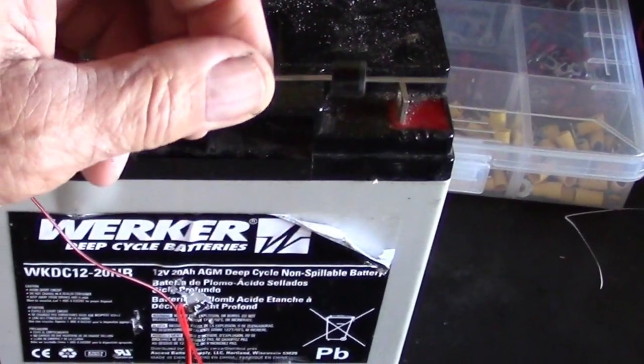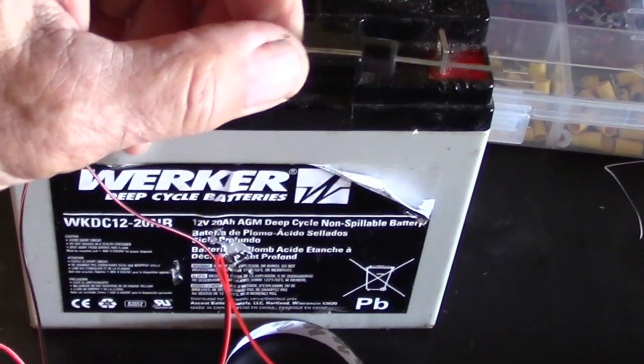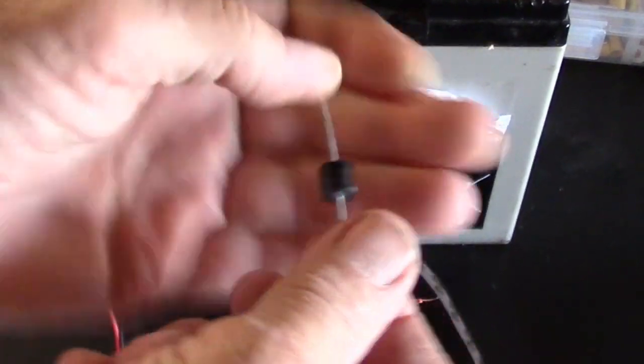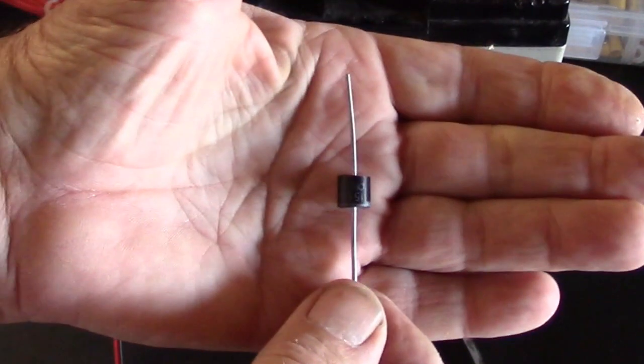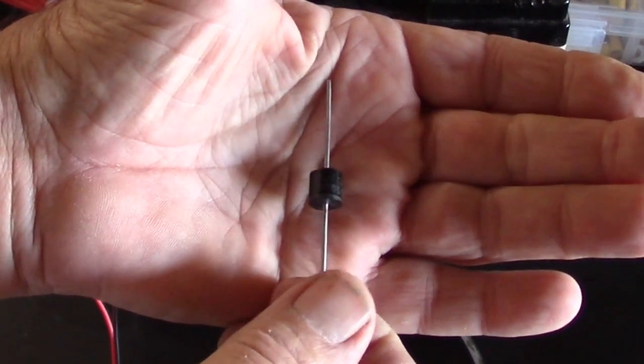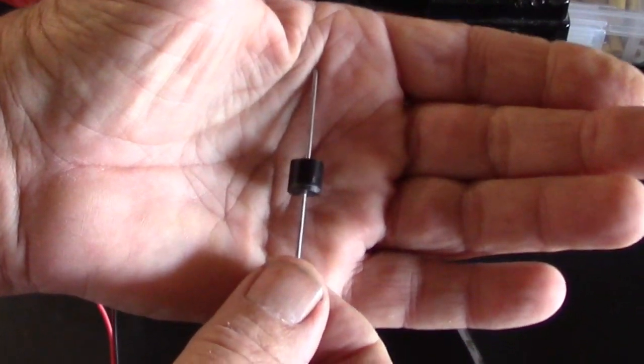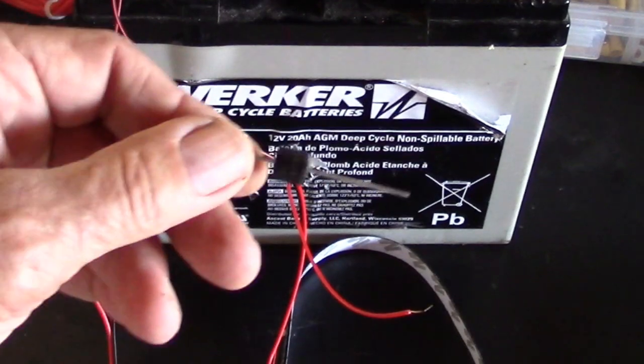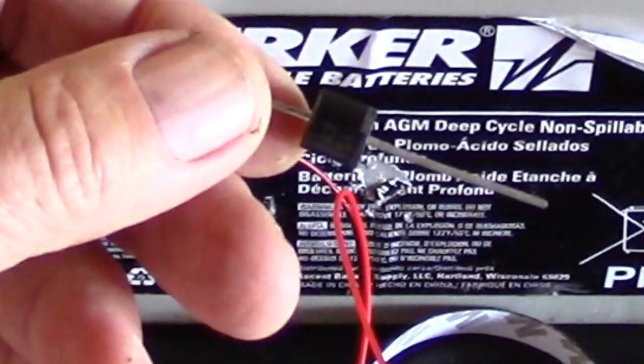I'm using a 1N4001, that's a one amp diode. Notice the size. It's got to be physically large to be able to handle the current, and one amp is very much overkill.